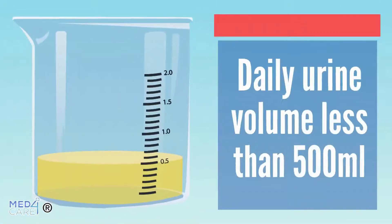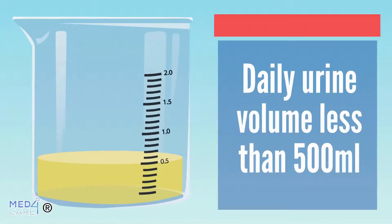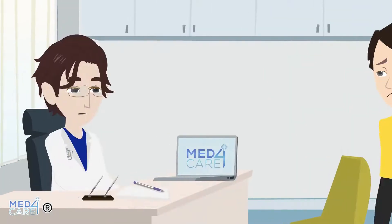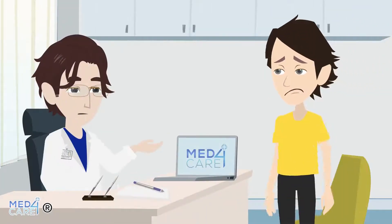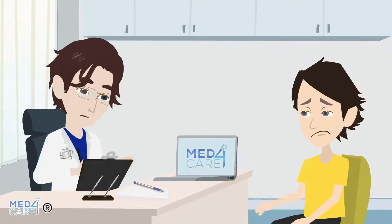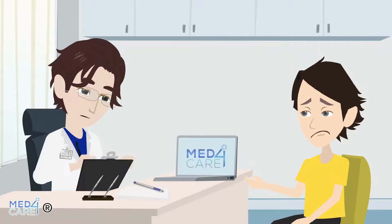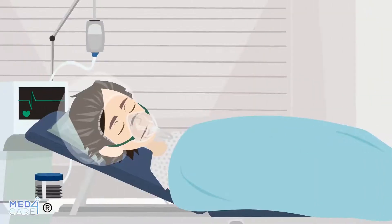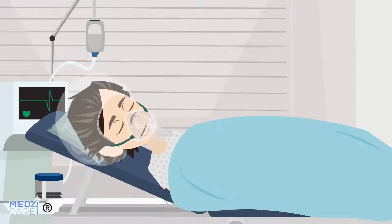Diagnosis of oliguria takes place simply by considering the volume of urine emitted throughout the day. Once the diagnosis has been ascertained, the evaluation of oliguria must take place quickly to avoid serious complications such as hyperkalemia and coma.